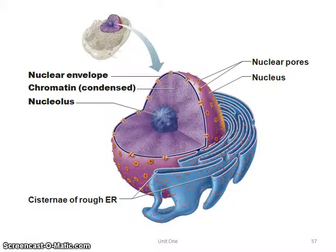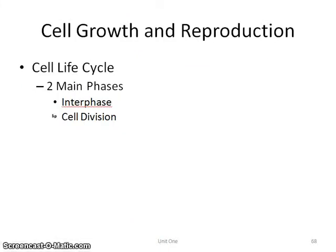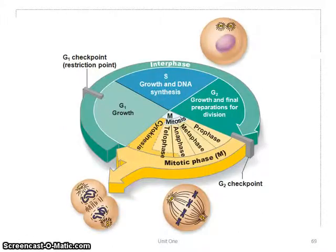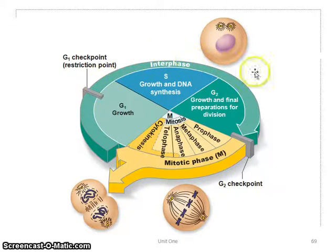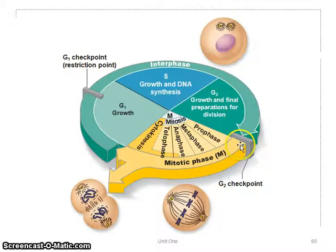We're going to skip ahead a little bit and cover cell growth and reproduction. The cell life has two phases: interphase and cell division. The cell at any point is going to be either in interphase or dividing. In the green part of the diagram, the cell is in its normal state — just one cell hanging out doing its thing. Then in the yellow part, we have the mitotic phase, where it begins to split into two completely individual cells.